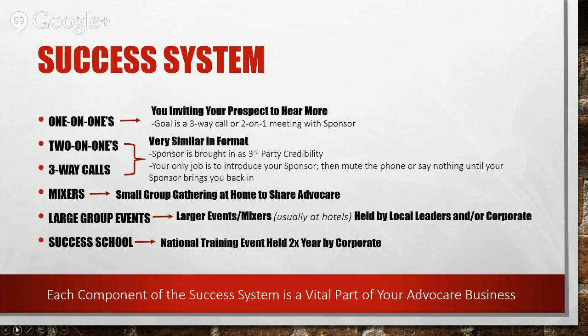Two-on-ones and three-way calls are essentially the same thing — one is in person, one is on the phone. Your sponsor is brought in for third-party credibility. Some of the people you'll talk to first are those closest to you who know all the dirt on you, so bringing in someone they don't know who has success in AdvoCare adds a lot of credibility. Your job is to introduce your sponsor, then mute your phone and let your sponsor talk.